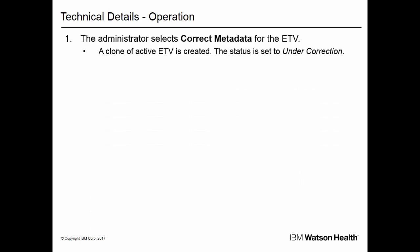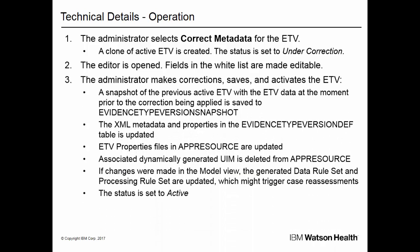The following steps summarize what occurs when the administrator corrects an ETV. The administrator selects 'Correct Metadata' for the ETV. A clone of the active ETV is created, and the status is set to 'Under Correction.' The editor is opened, and fields in the whitelist are made editable. The administrator makes corrections in the model and user interface views, then saves and activates the ETV. The system then performs the following tasks: a snapshot of the previous active ETV, with the ETV data at the moment prior to the corrections being applied, is saved to a new table called Evidence Type Version Snapshot.